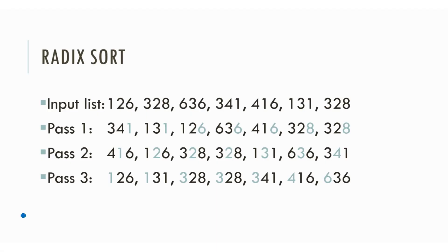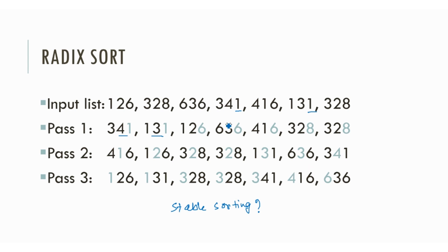An important point worth noting is that 341 appeared before 131 in the first round, despite the key for both numbers being 1. As part of Radix Sort, counting sort is used in every round — it is a stable sorting algorithm. Stable sorting algorithms maintain the relative order of numbers when multiple numbers have the same key. So in the first round, since 341 appeared before 131, after the first round 341 is placed before 131.